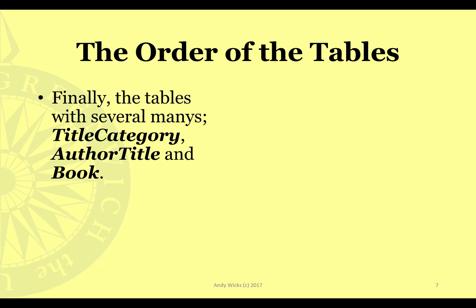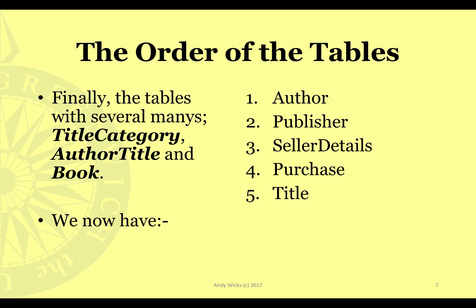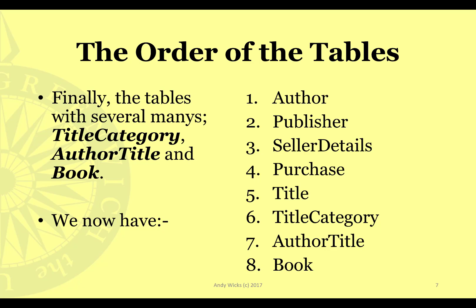The ones with the most many's in my design have title category, title author, and book as the tables with several intersections. So we now have nine tables, of which we're going to use eight. We've got author, publisher, and seller details — these are the ones with only one-ends. Then we've got purchase and title, which have one many each. Then we have title category, author title, and book, each of which have two many's on the joins.